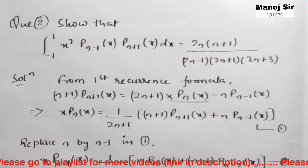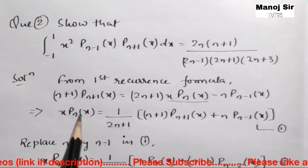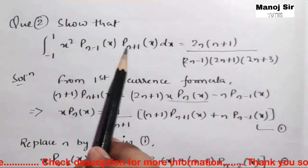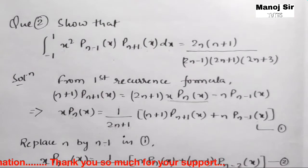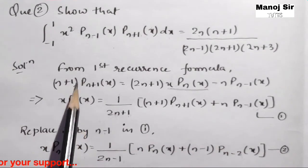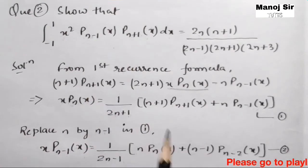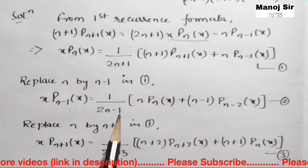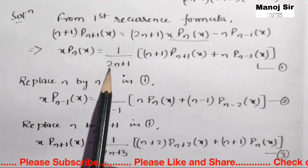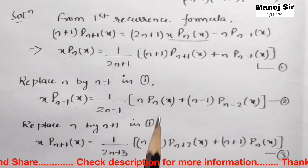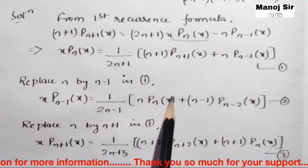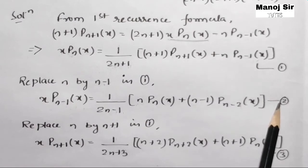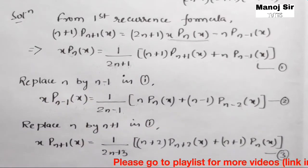In equation 1 we have P_n(x), but we need P_{n-1}(x) and P_{n+1}(x), and since we have x squared, one factor of x is for each. So we need to replace n with n-1 in equation 1. Replacing n by n-1 gives: x·P_{n-1}(x) = [1/(2n-1)] times [n·P_n(x) + (n-1)·P_{n-2}(x)]. Let this be equation 2.